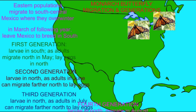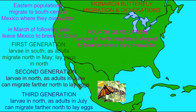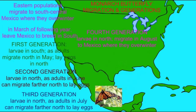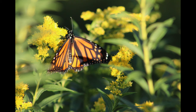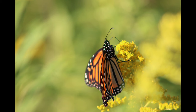These eggs hatch into the larvae of the fourth generation. They develop as larvae in the north, but as adults they will migrate around the month of August to Mexico, where they will overwinter and start the cycle again.